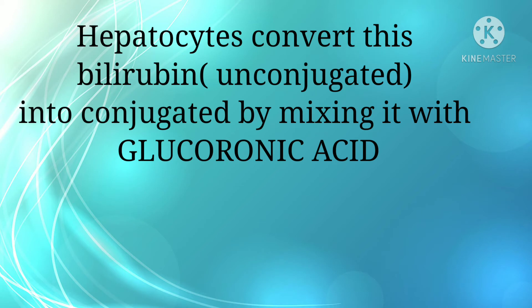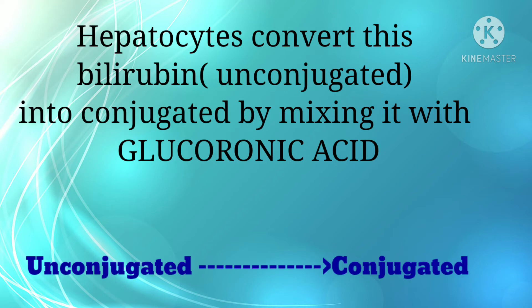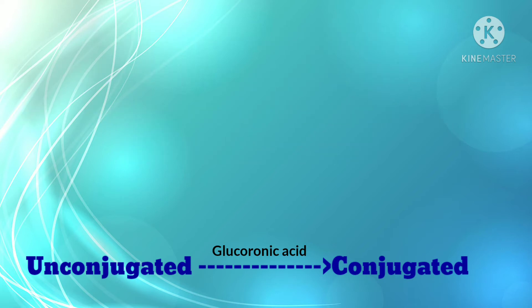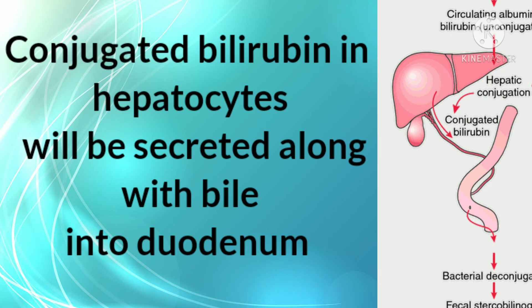Next, hepatocytes convert this bilirubin — which is unconjugated — into conjugated bilirubin by mixing it with glucuronic acid. So unconjugated bilirubin is converted into conjugated bilirubin with the action of glucuronic acid.